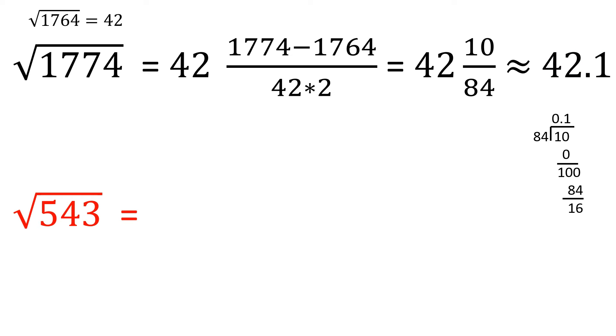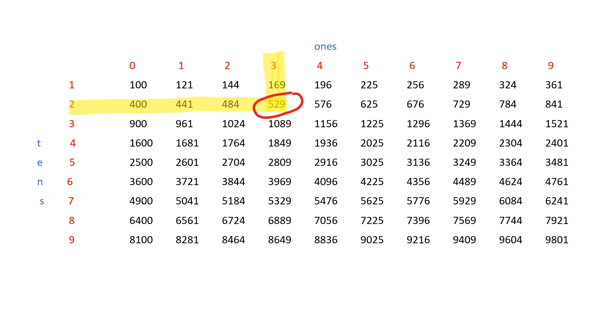Let's do one more. Let's determine the square root of 543. We need to determine the largest perfect square less than this number. The largest perfect square less than 543 is 529.